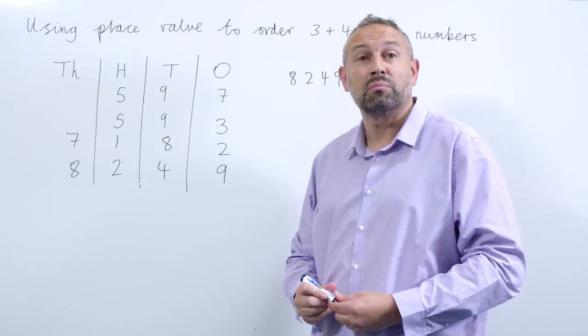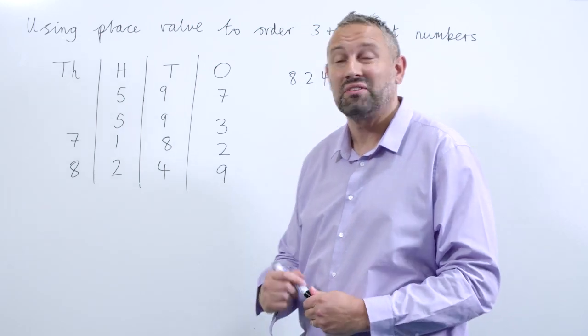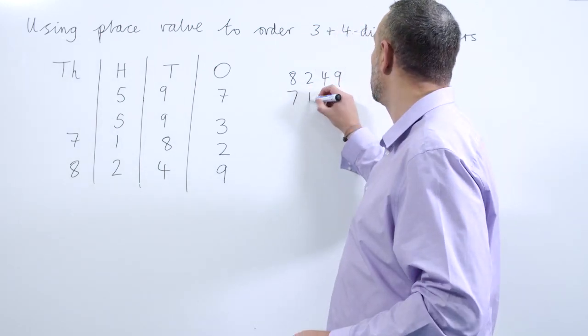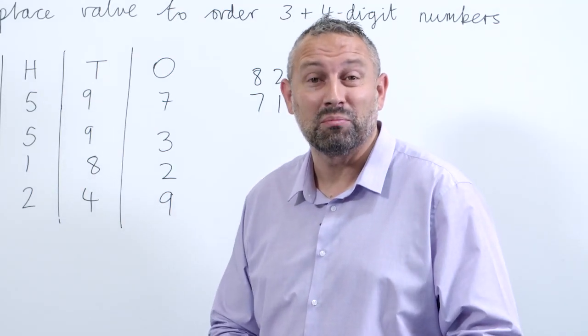And then the second largest number is the one with the seven in the thousands column because the seven represents seven thousands. So that's 7182. Now we move on to the two three-digit numbers.